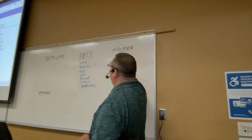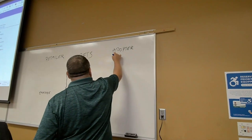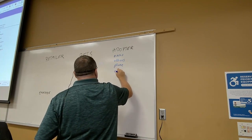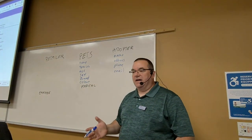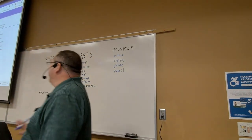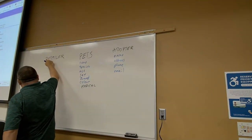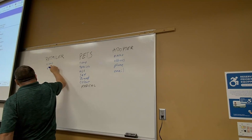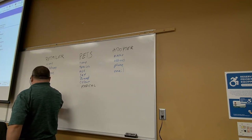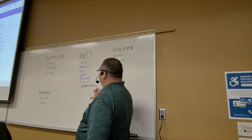For the adopter — the person buying the pet — we need: name, address, phone, and email. For the retailer, we'll have the name and address, and phone. For the employee, we'll have an employee number and a name. That's enough for those entities.